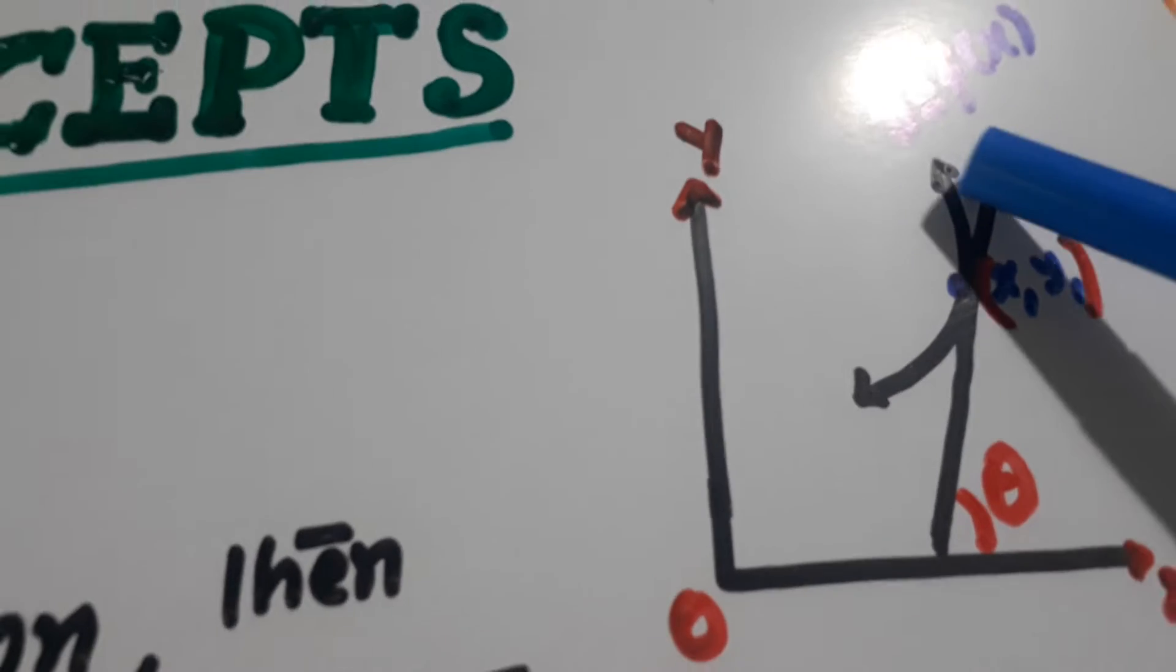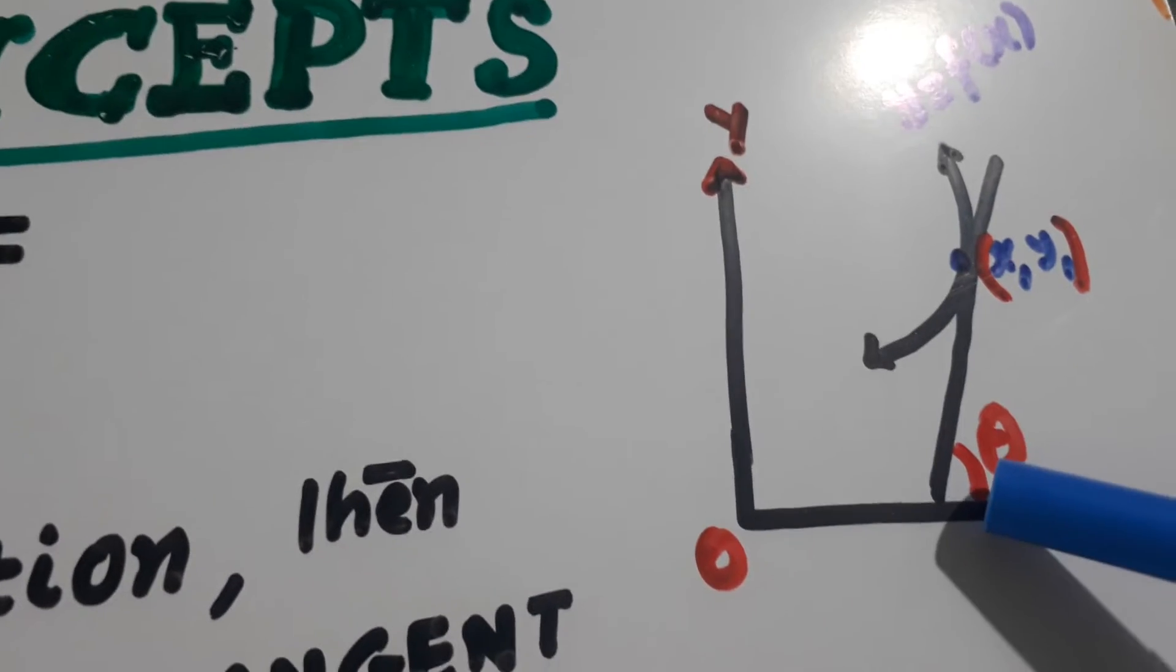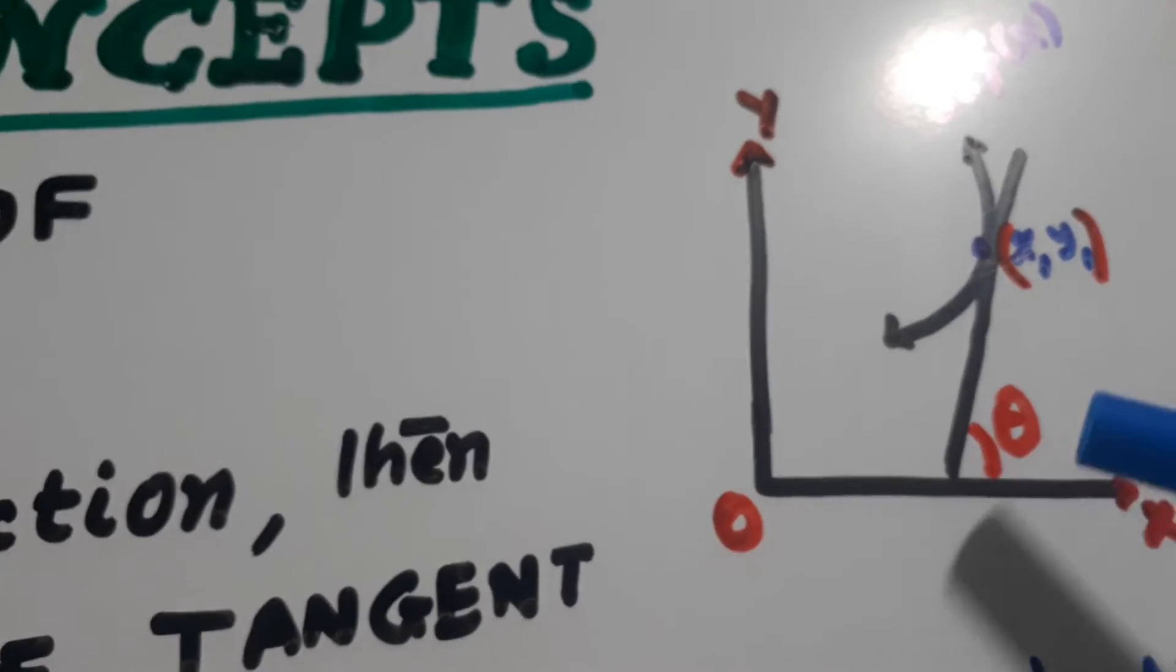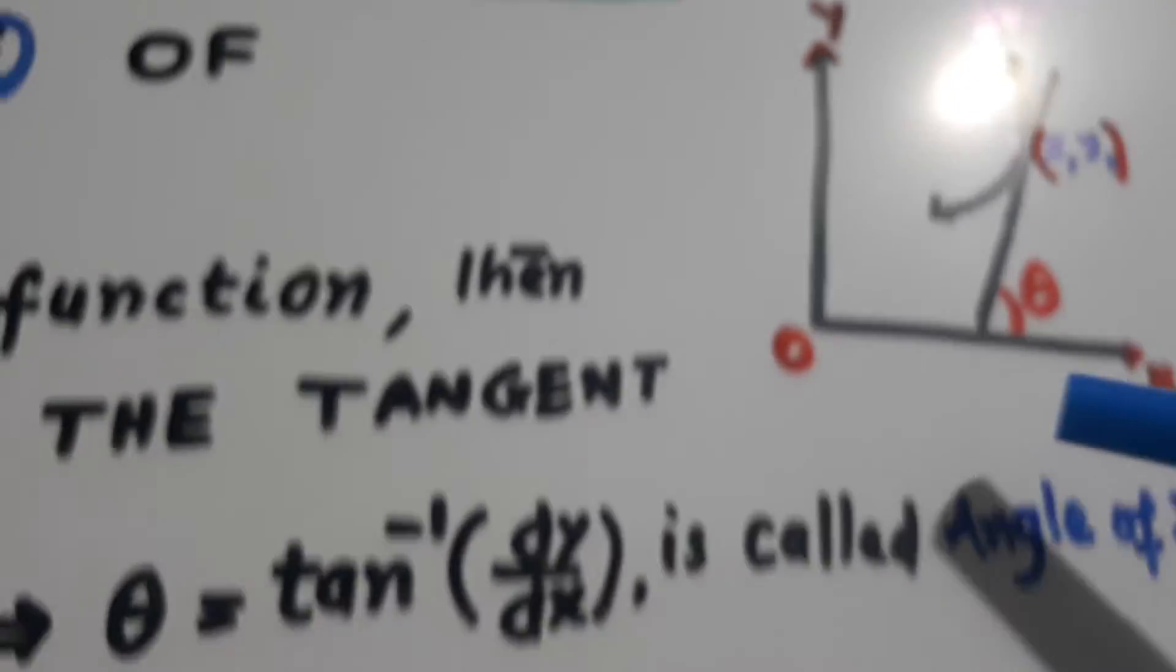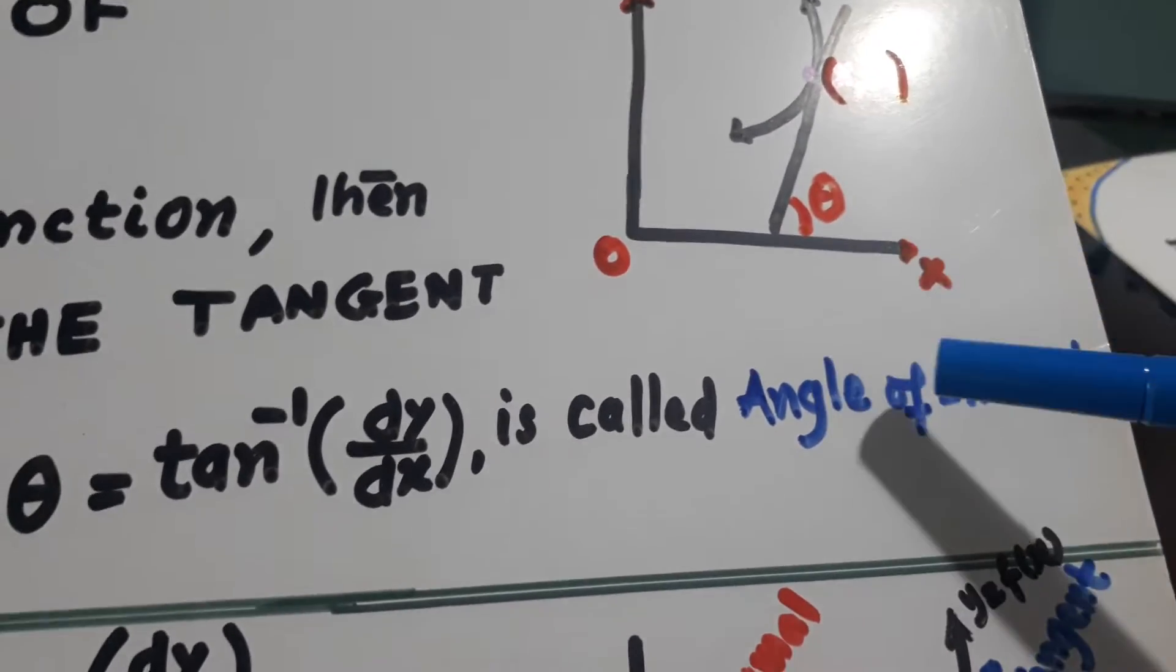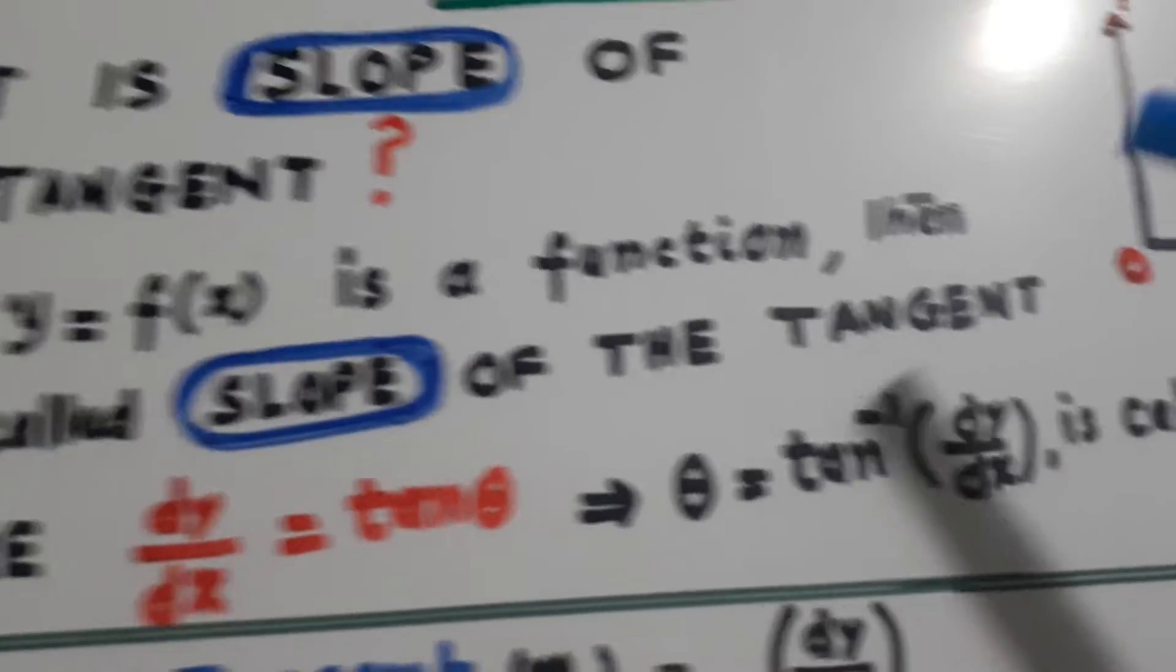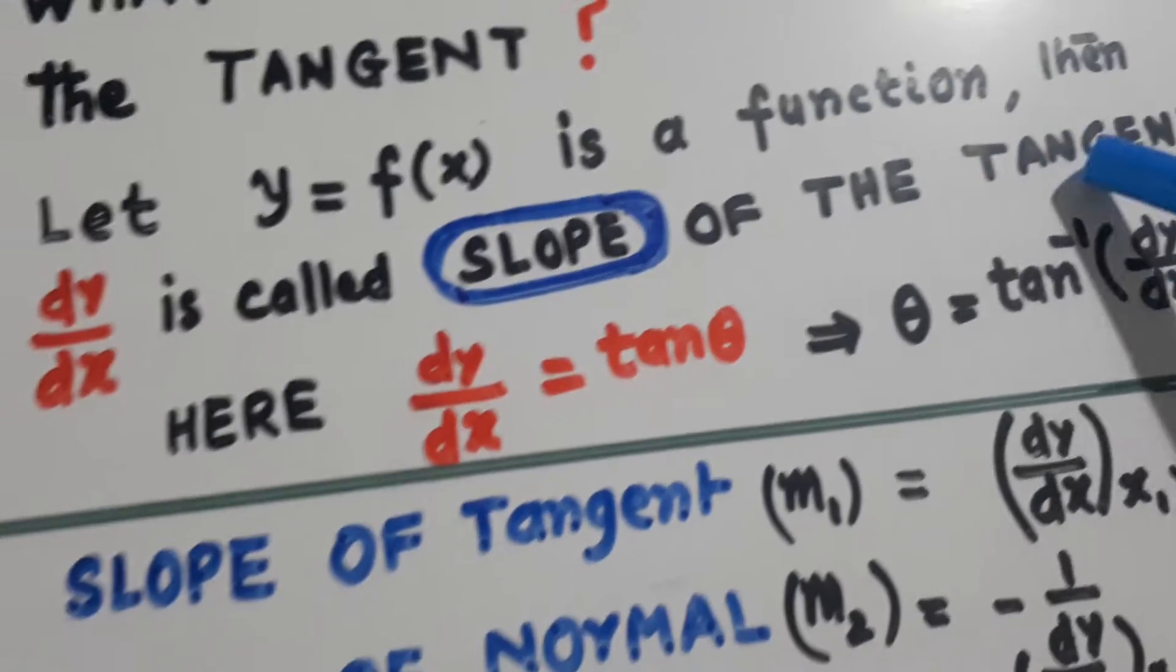Look here. Here is the curve. At this point, tangent has been drawn and this is making angle theta with the positive direction of x-axis. So this is called the angle of inclination. Theta is called angle of inclination and dy by dx is called the slope of the tangent.